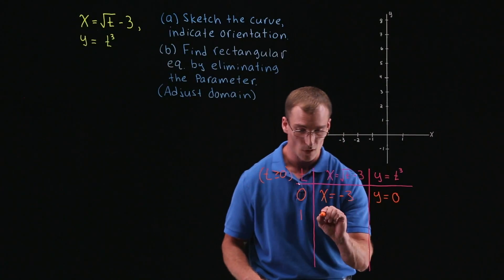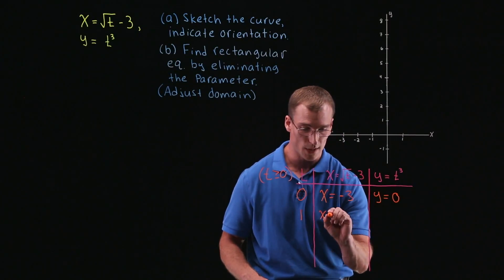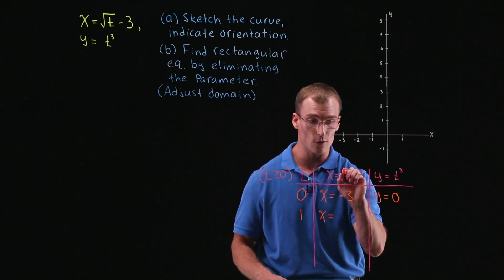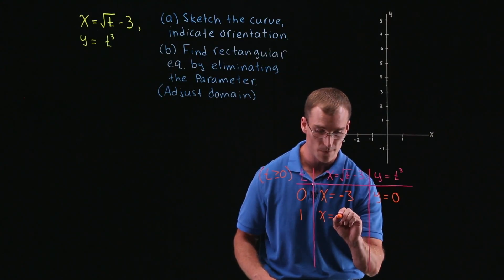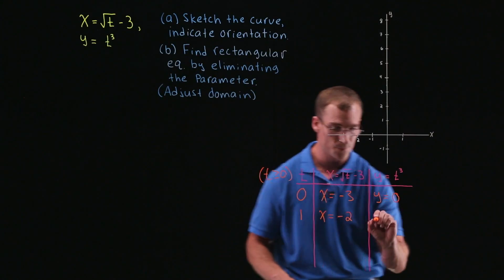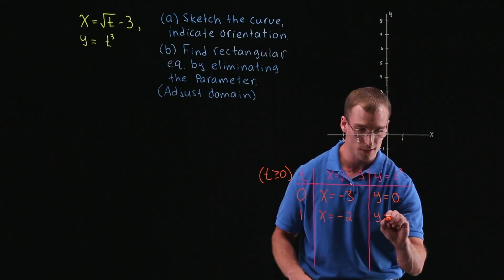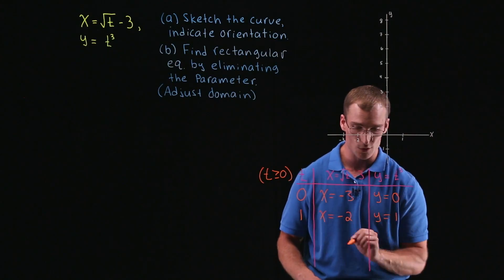Let's take t equal to 1. So next we have x is equal to square root of 1, which is 1 minus 3. So x is equal to negative 2. And y is equal to 1 cubed, or just 1.